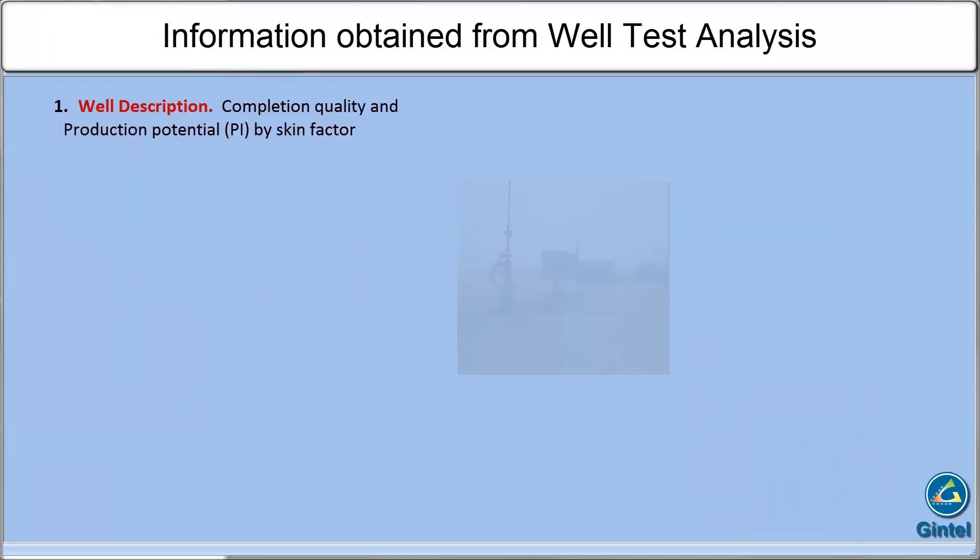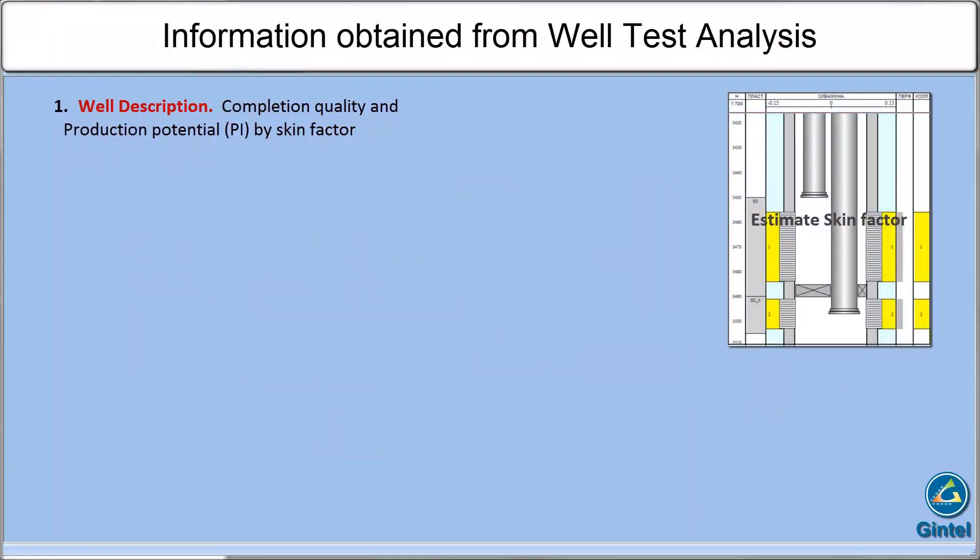Information obtained from well test analysis may be grouped into two areas. First, well description: we can learn how effective the completion is and estimate production potential by means of skin.